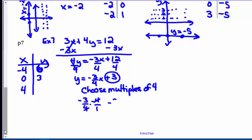And when I multiply negative 3 fourths times positive 4, I'm going to get negative 3 plus this 3 would give me 0. So there's the three points for example 7. And that's it for today.